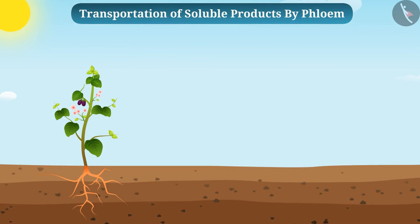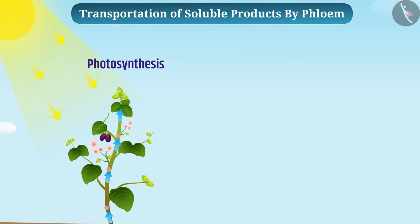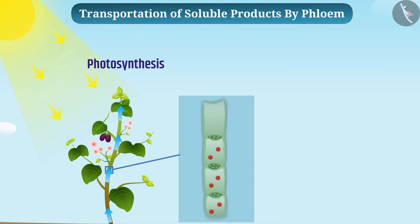Transportation of water is important, but at the same time, transportation of soluble products of photosynthesis, amino acids, and other substances is also important. This job is done by phloem. The transportation of soluble products of photosynthesis is called translocation.